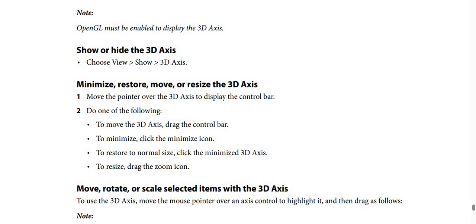How to minimize, restore, remove, or resize the 3D axis: Step 1 — move the pointer over the 3D axis to display the control bar. Step 2 — do one of the following: to move the 3D axis, drag the control bar; to minimize, click the minimize icon; to restore to normal size, click the minimized 3D axis; to resize, drag the zoom icon.